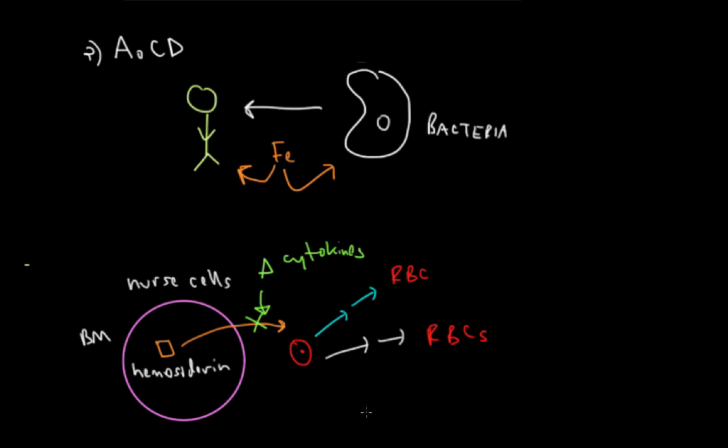In that way, it's similar to a real iron deficiency, but you have a different initial cause. The best way to treat anemia of chronic disease is just to treat the infection. Once the infection goes away, this cytokine block will be removed, and the hemosiderin will be able to supply enough iron to have normally developing RBCs.